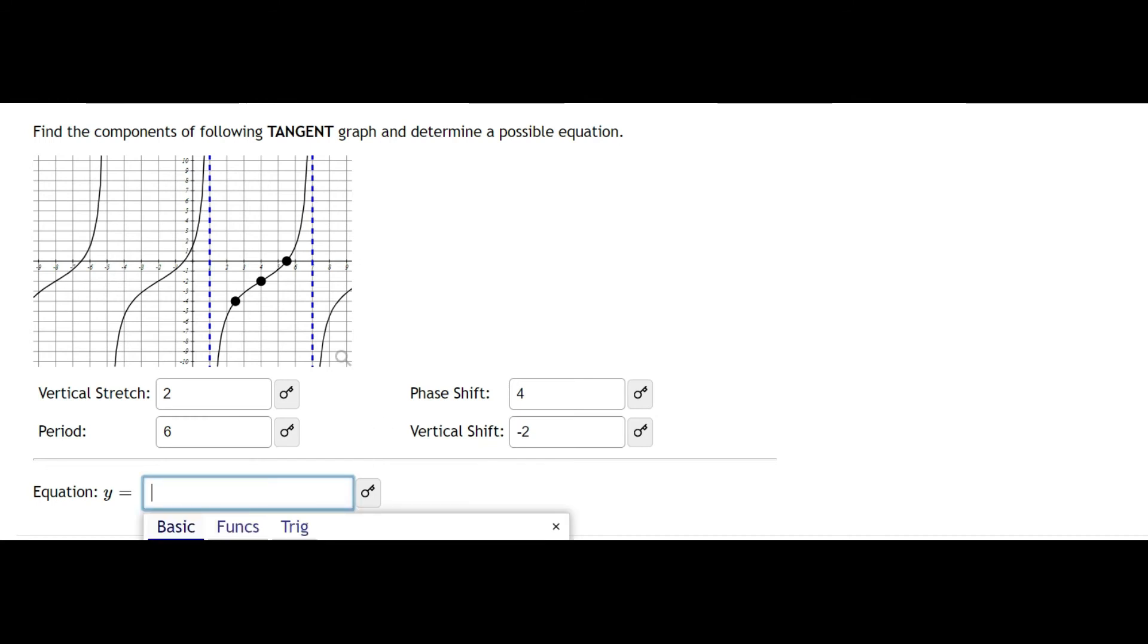Now if you've never seen the equation for tangent, it looks like this. So you have a times tangent of b times x minus c, and this is plus d. So you have lots of different variables.